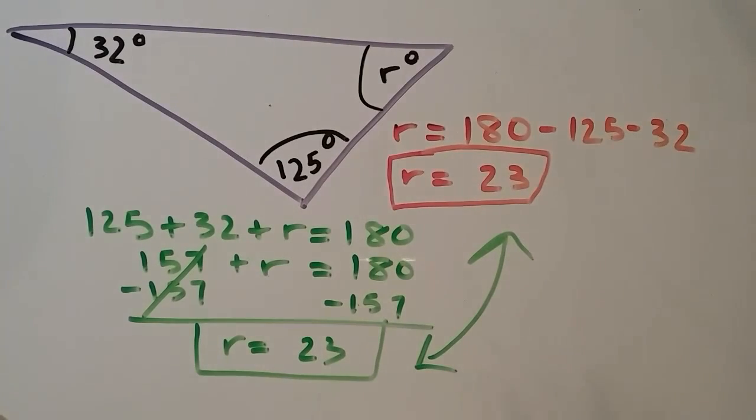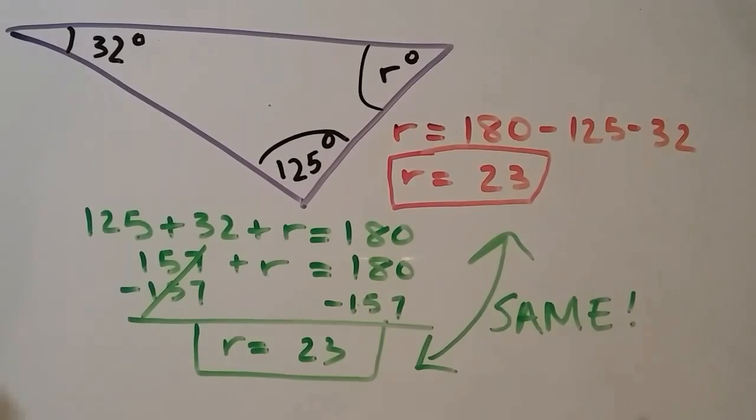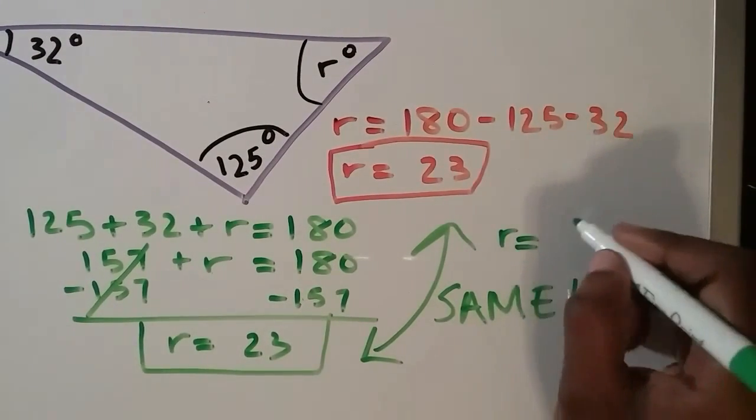And we know this is true because 23 degrees plus 32 degrees plus 125 degrees is equal to 180 degrees.